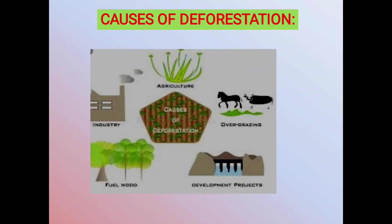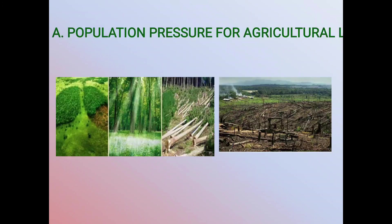Causes of deforestation are many. Some outstanding causes are as follows. First is population pressure for agricultural land. Unprecedented growth in world population is demanding increased agricultural production to sustain high birth rates. In developing tropical countries, there is a trend of reversion of forest to agricultural land and land for other uses. Shifting cultivation, or jhum cultivation, a 9,000-year-old practice, is a more specific cause of deforestation through the land use change pattern of slash and burn for agriculture.